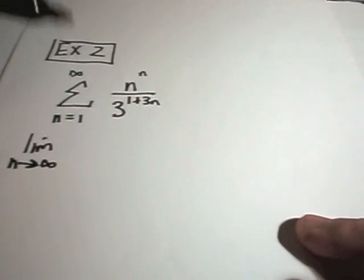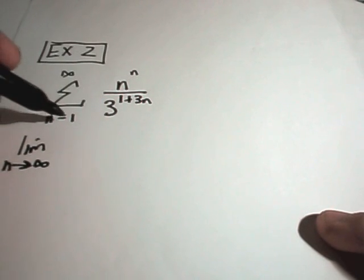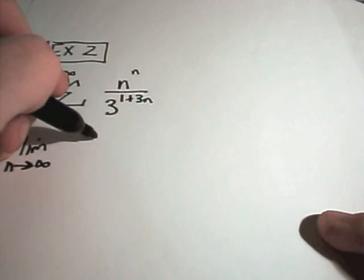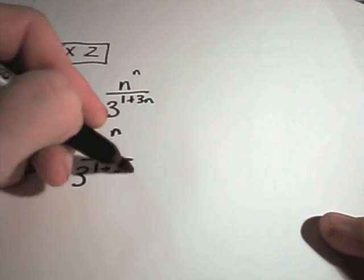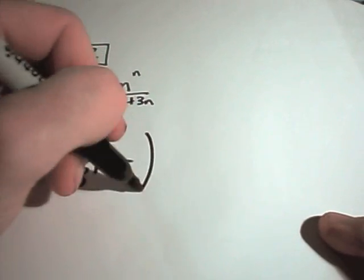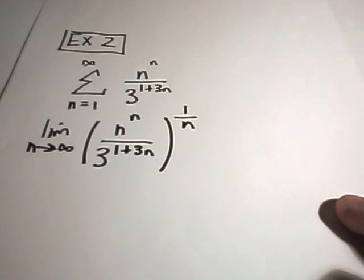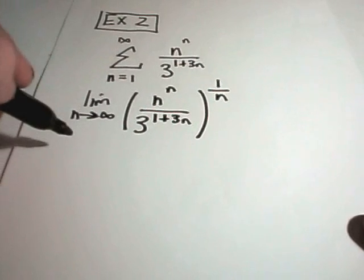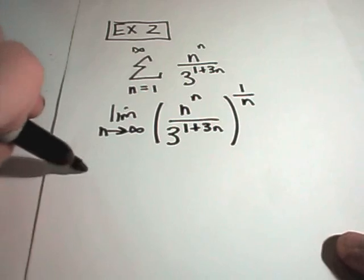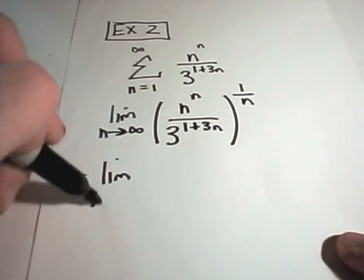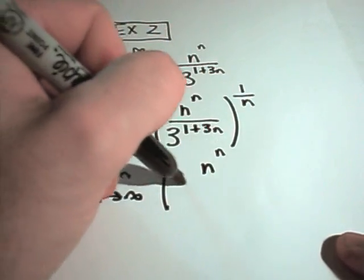So the limit as n goes to infinity. It says we take the nth root of the absolute value. This stuff is going to be positive for n greater than 1 anyway. So we'll have n raised to the n over 3 raised to the 1 plus 3n power. And I'm taking the nth root of that. So that'll be to the 1 over n power. So now we just have to do a little bit of algebra and then figure out what our limit equals here. So we have the limit as n goes to infinity. I'm going to rewrite the inside.